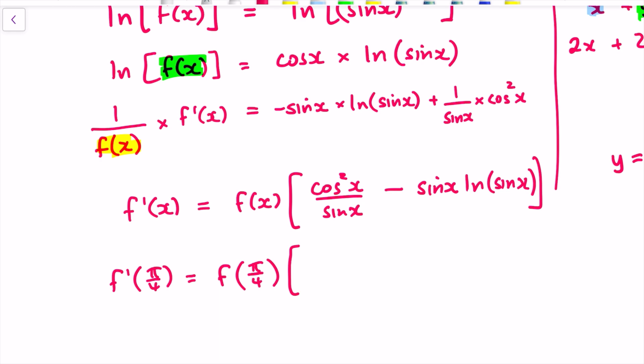cosine squared of pi over 4, or cosine pi over 4 is a special angle so cosine pi over 4 is 1 over root 2 and then we square that and sine of pi over 4 is the same because pi over 4 is 45 degrees cosine and sine are the same except that one's not squared minus 1 over root 2 times log of 1 over root 2.